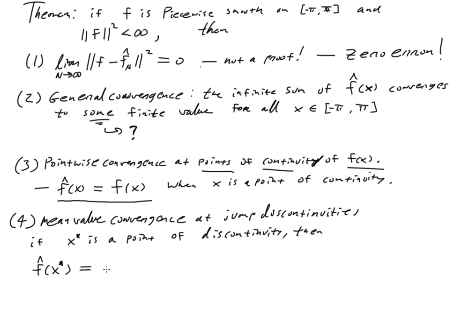It actually splits the difference between the jump discontinuity sides. So it actually ends up being the average. We're going to approach that from the negative side of f(x), and the limit as x goes to x star from the positive side. So we're going to add those two together and then divide by two. So what we're doing is basically averaging the left and right limits.